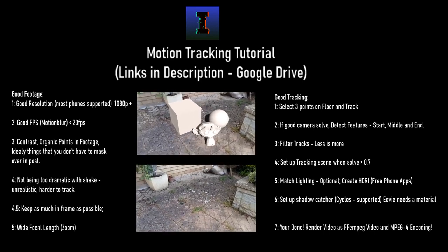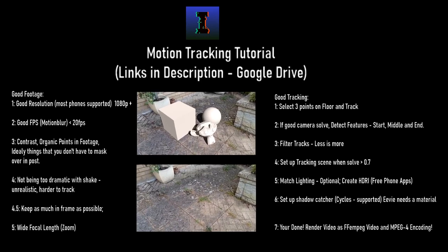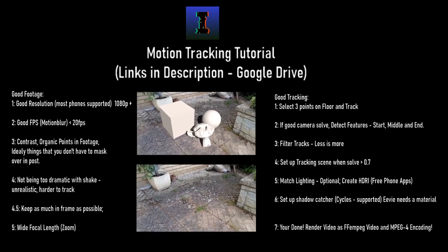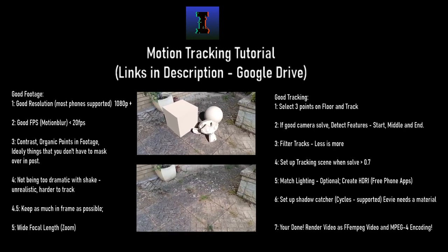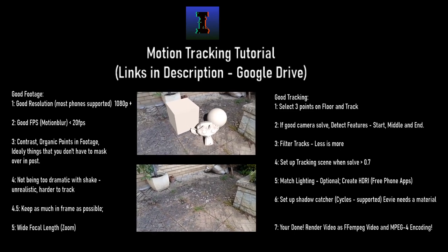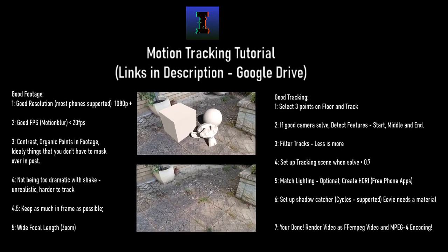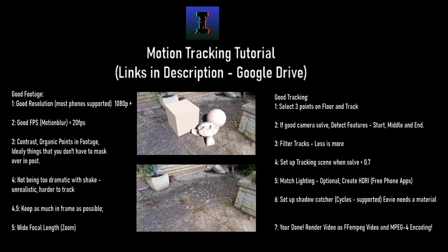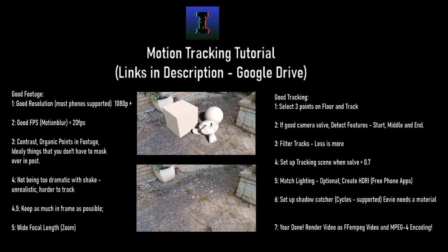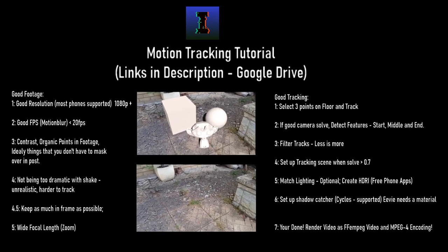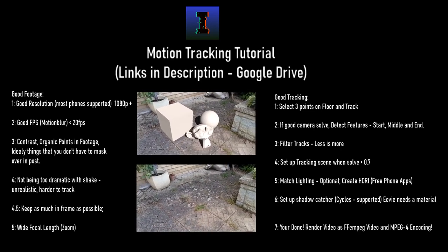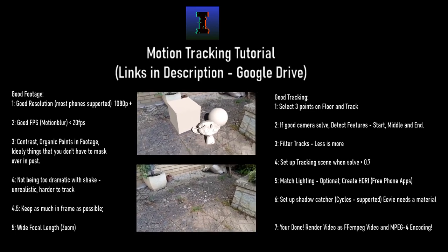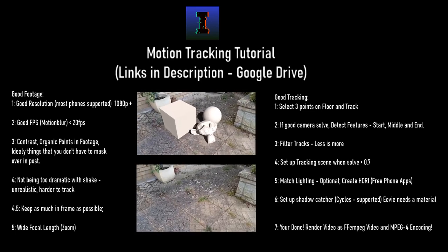Number 4.5: keep as much in frame as possible. If you're doing a drone shot, this may not be possible because you'll go really fast. But if you are tracking this sort of thing, try to keep as much in frame as possible and just look at a few points in the middle of your scene. You see here the white specs in the middle always stayed in frame — that was the core of the tracking points because they tracked really well.